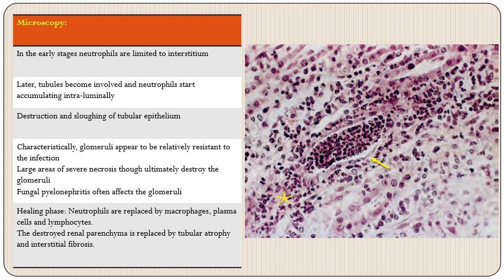On light microscopy of acute pyelonephritis, since this is acute inflammation the predominant cell population is neutrophils. In early stages neutrophils are limited only to the interstitium; later tubules also become involved and neutrophils accumulate within the lumina of tubules, followed by destruction and sloughing off of tubular epithelial cells. Characteristically, glomeruli are spared by acute pyelonephritis; however, as large areas of severe necrosis develop, ultimately glomeruli will also be destroyed. One exception is fungal pyelonephritis where glomeruli are affected early.